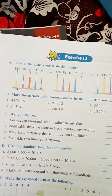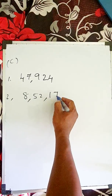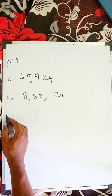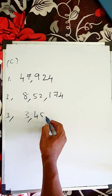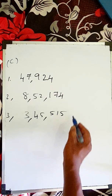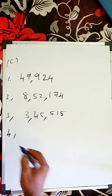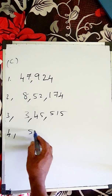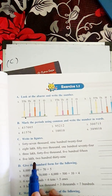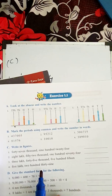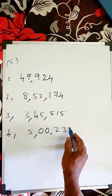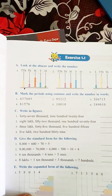Then one hundred seventy-four. So: 8,52,174. Number three: three lakhs — write three, put comma. Forty-five thousand — write forty-five, put comma. Five hundred fifteen — write 515. Number four: five lakhs — write five, put comma. Ten thousands and thousands are not there so put zero. Then two hundred thirty-nine. So: 5,00,239.